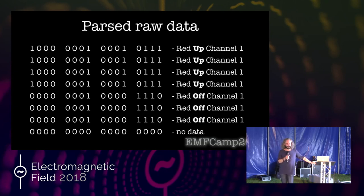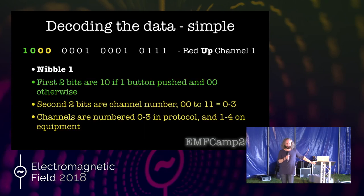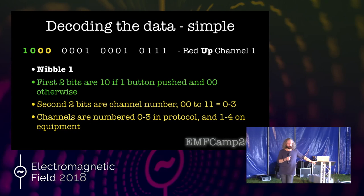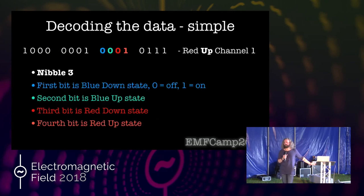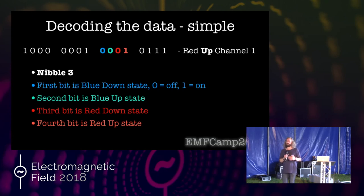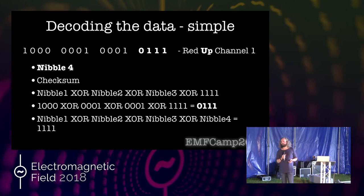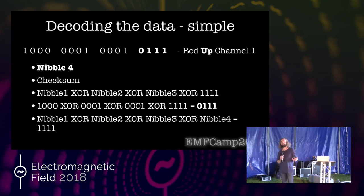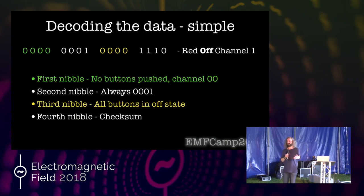The protocol has four nibbles. The first nibble tells you the channel number (0 to 3, representing channels 1 to 4) and whether a button is being pushed — pushing two buttons at once gives 0,0. The second nibble didn't change. The third nibble tells you the button state for the simple controller — up or down on each channel. The fourth nibble is a checksum: XOR the first three nibbles together and invert, giving you the fourth nibble, which ensures data integrity in transmission.